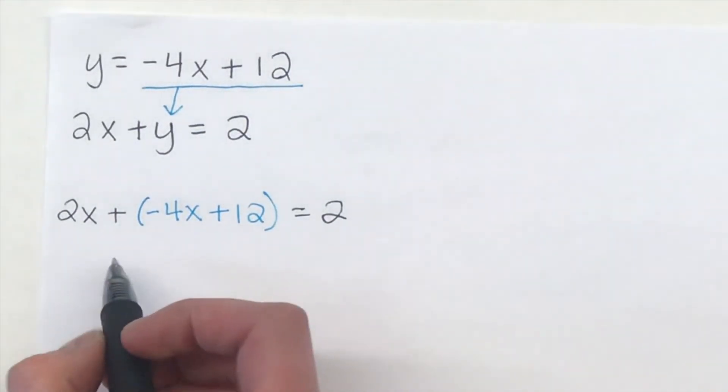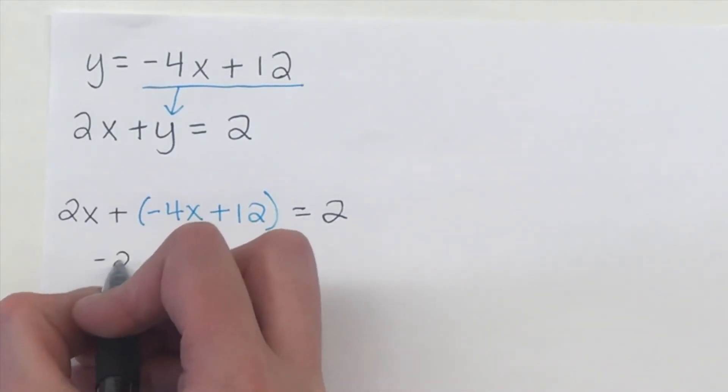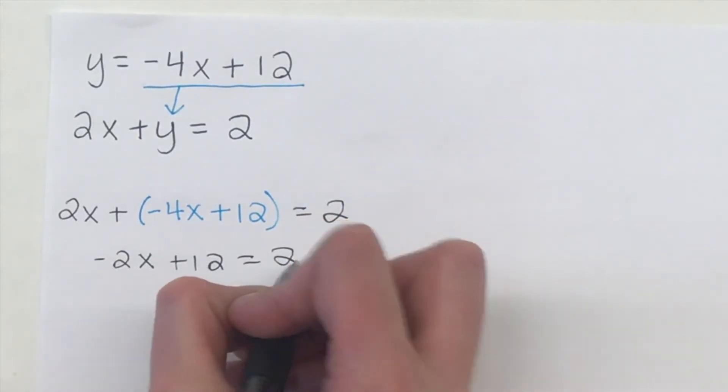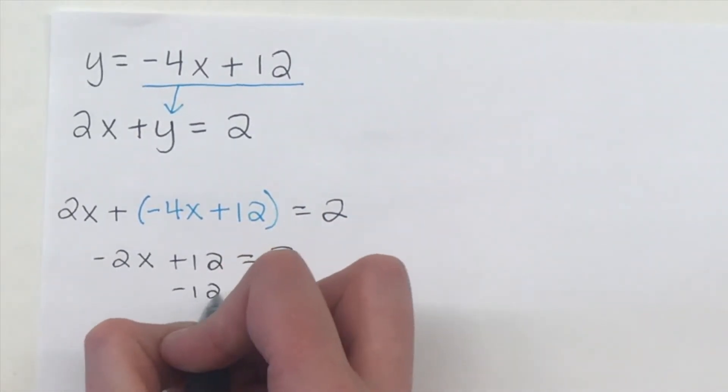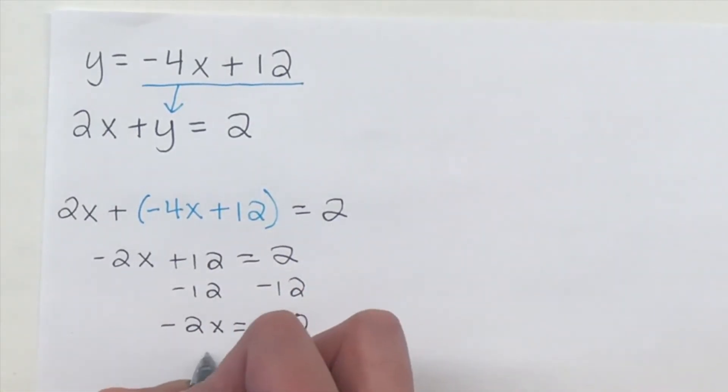So we're going to go ahead and solve it for x. So negative 4x plus 2x is negative 2x plus 12, equals 2. Subtract the 12 from both sides. We're going to get negative 2x equals negative 10. Divide by negative 2, and we get x equals 5.